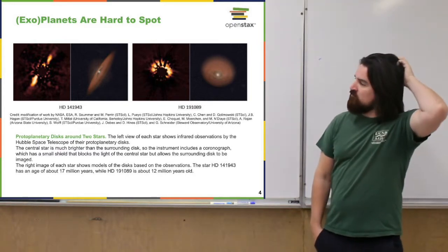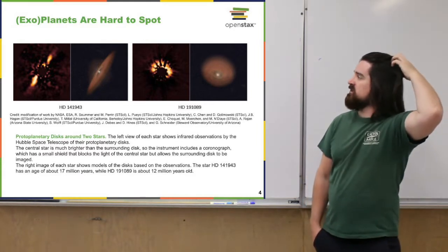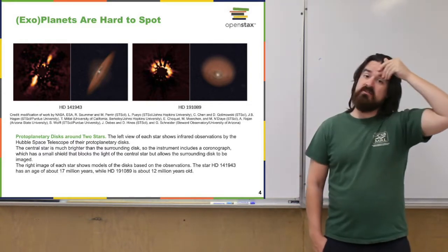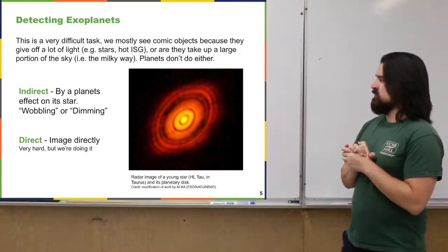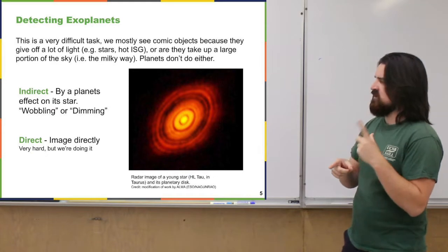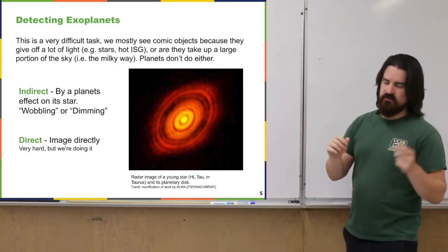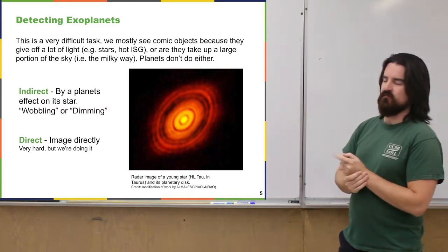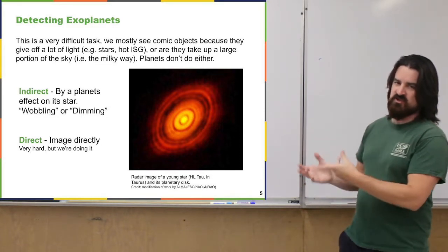The first confirmed observation of an exoplanet was less than 30 years ago — 1995. Since then we've observed a good number of them using a couple of different techniques. There are indirect techniques where we say there is a planet there not by seeing the planet itself, but by seeing how the planet affects the star it's orbiting. There are two sorts of indirect methods: one is a wobbling of the star and the other is a dimming of the star. The other category is directly imaging the planets.